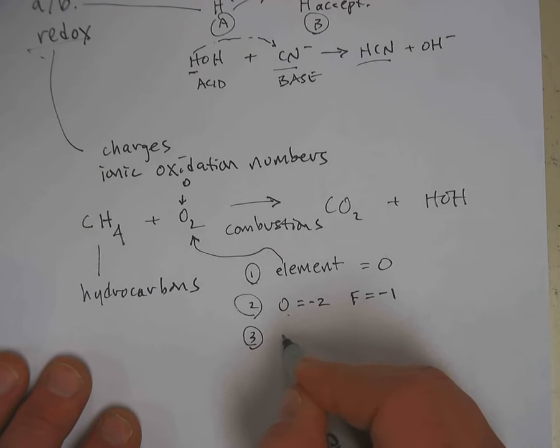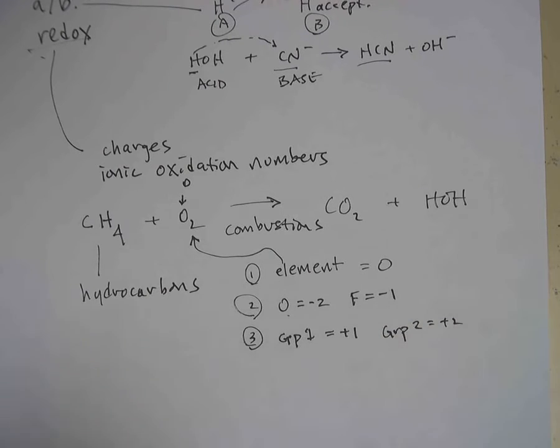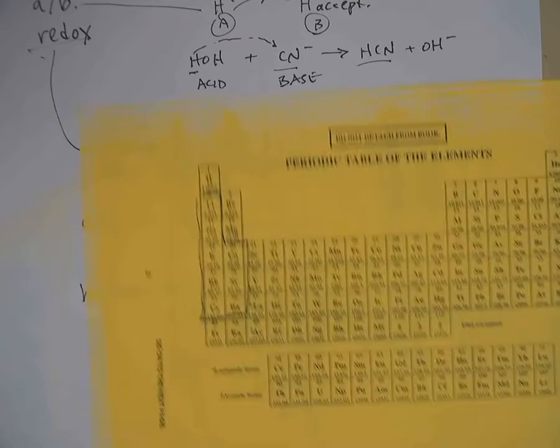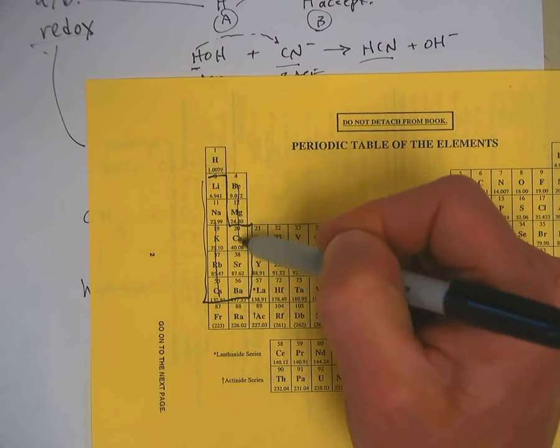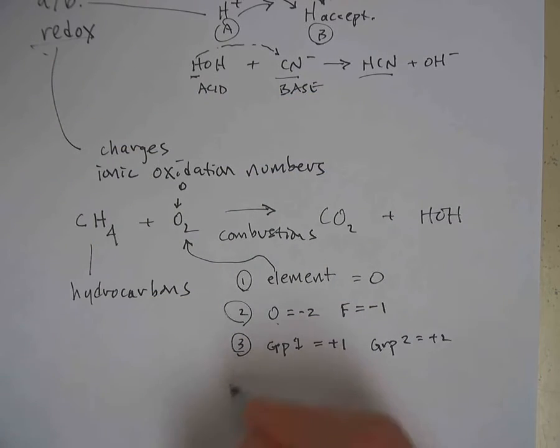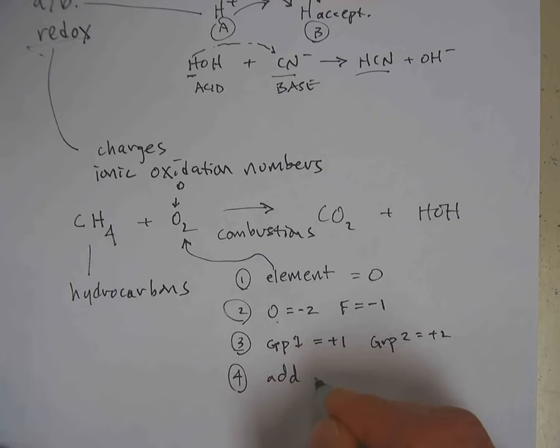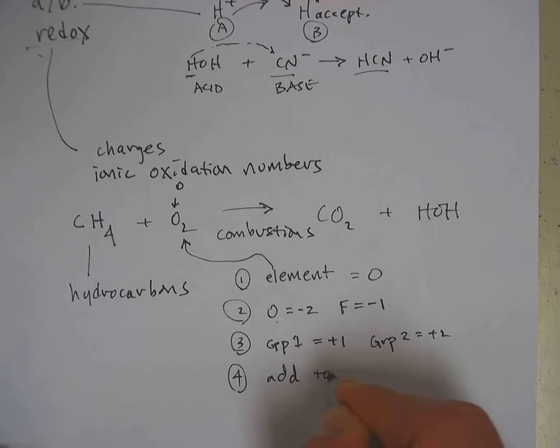Number three, if it's from group one, it's positive one on the periodic table. If it's from group two, it's positive two on the periodic table. This is group one right here. This is group two right here.